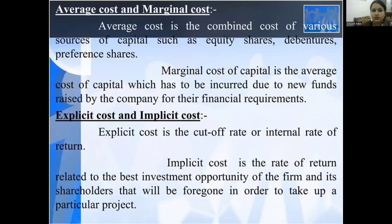Average cost and marginal cost. Average cost is the combined cost of the various sources of capital such as equity shares, debentures, and preference shares. Marginal cost of capital is the average cost of capital which has to be incurred due to new funds raised by the company for their financial requirements. Explicit cost is the cutoff rate or internal rate of return, and implicit cost is the rate of return related to the past investment opportunity of the firm and its shareholders that will be foregone in order to take up a particular budget.